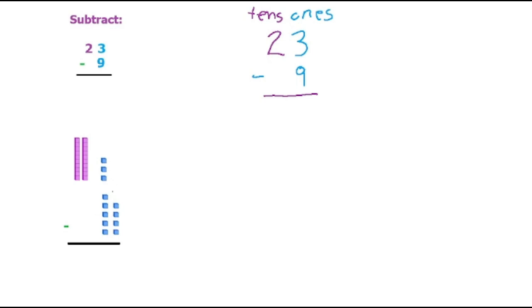So how are we going to take 9 away from these 3? We only have 3 of them, but we need to take 9 away. So this is where regrouping or borrowing comes in.